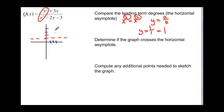We also found that the y-intercept was (0, 0), and that the zeros of our graph are at x = negative 3 and x = 0. So now we have to continue on and determine if the graph crosses the horizontal asymptote.